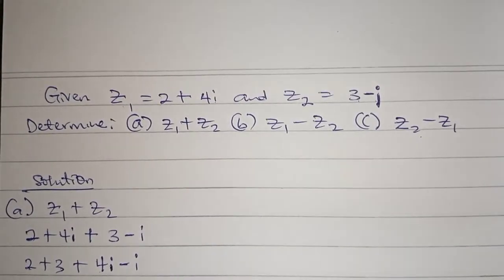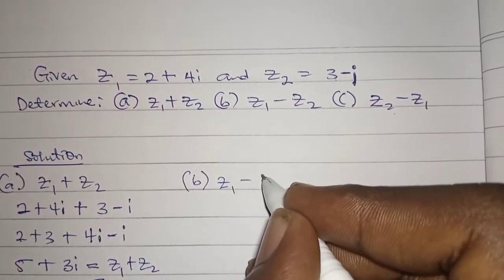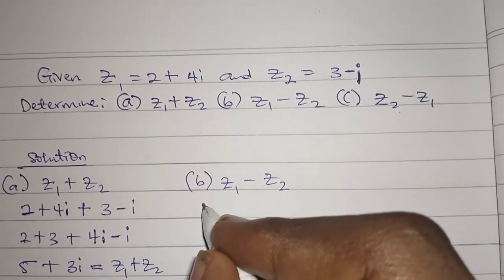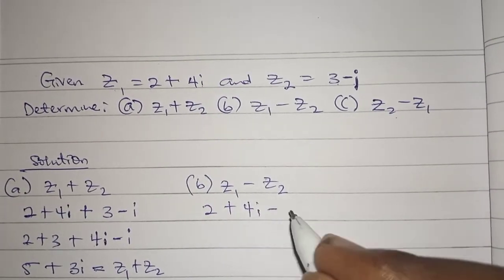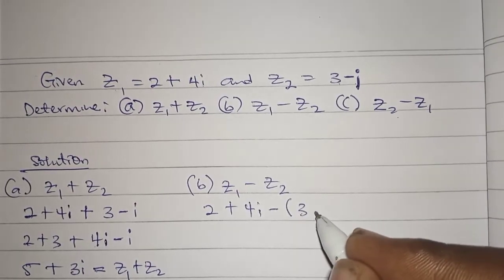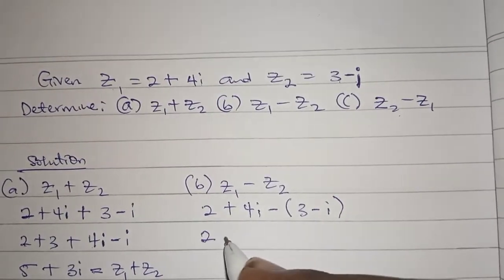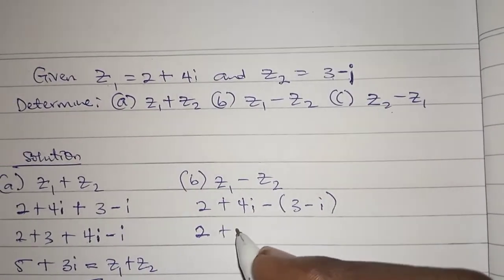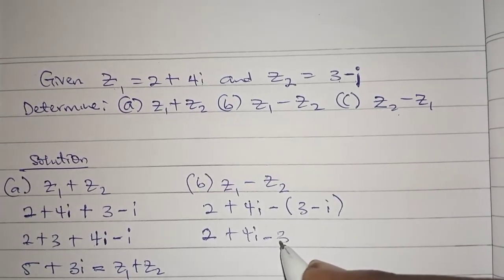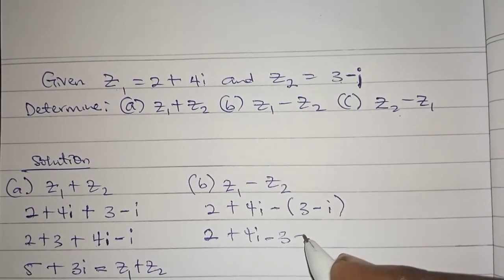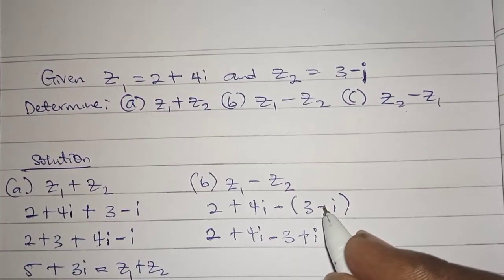z1 minus z2 now. z1 is 2 plus 4i minus z2 is 3 minus i. So solving for that we have 2 plus 4i, opening the brackets becomes minus 3, minus times minus gives us plus i. If you don't know how we got minus times minus to give us plus, we've done a video on that in the description, make sure you check that video.